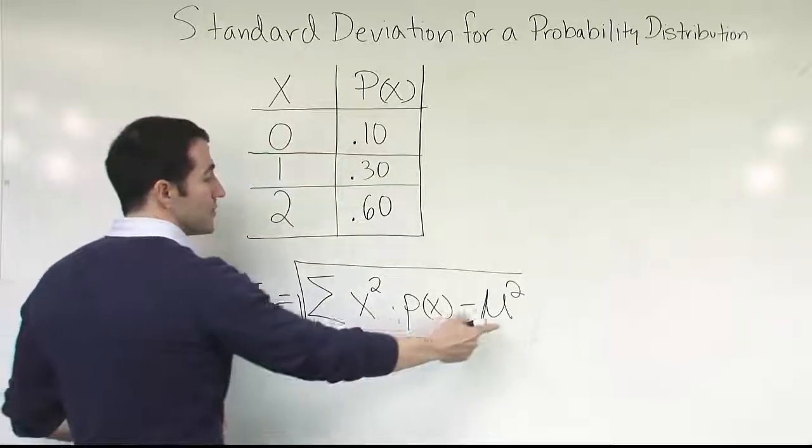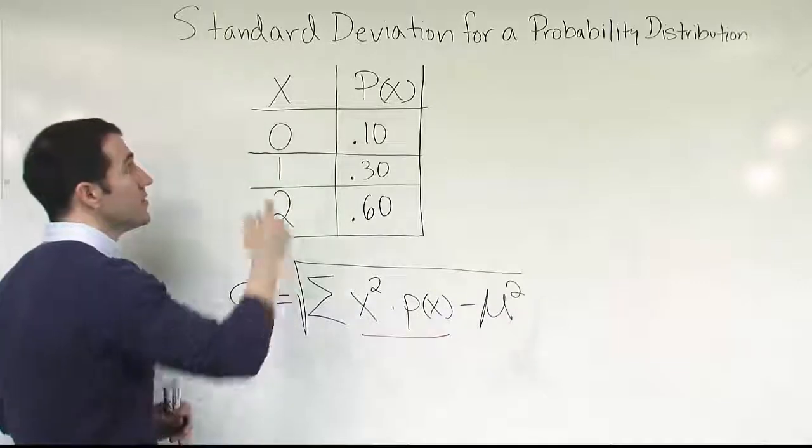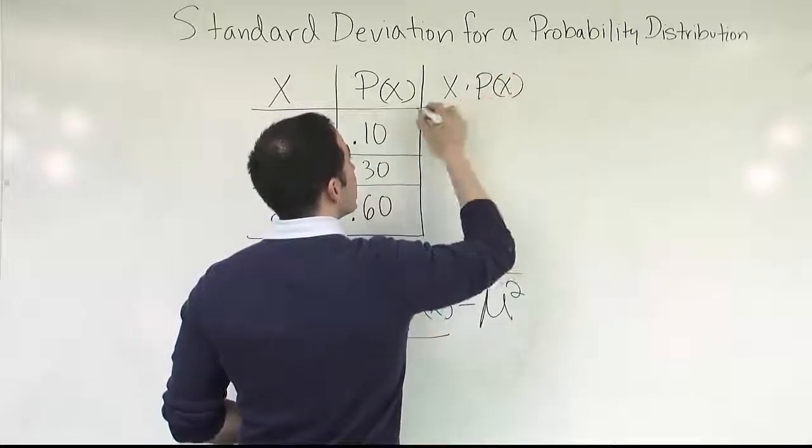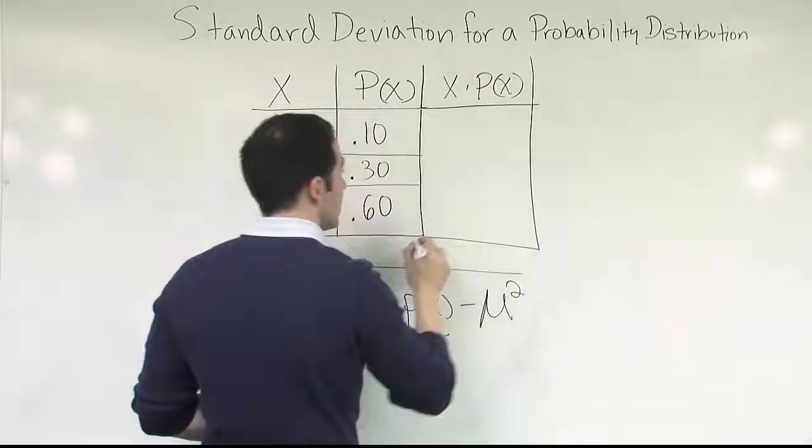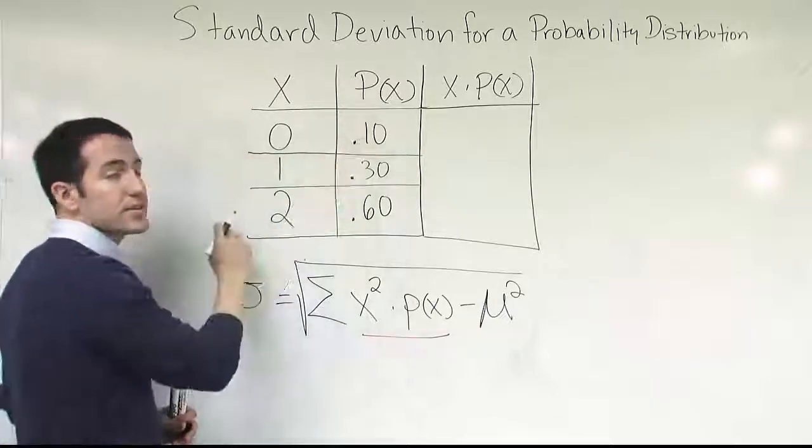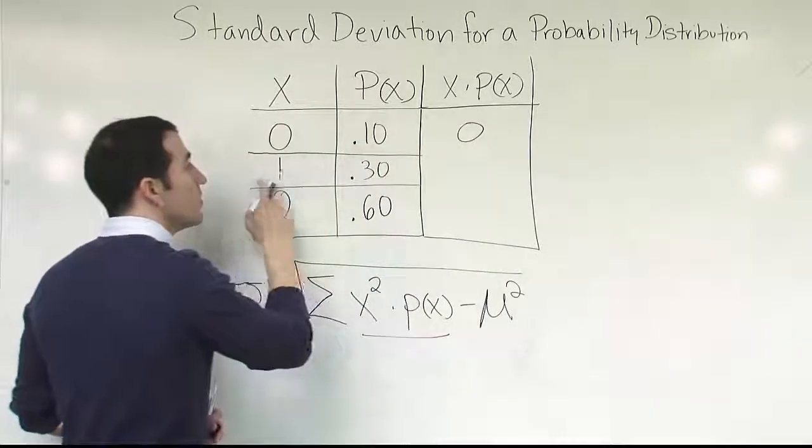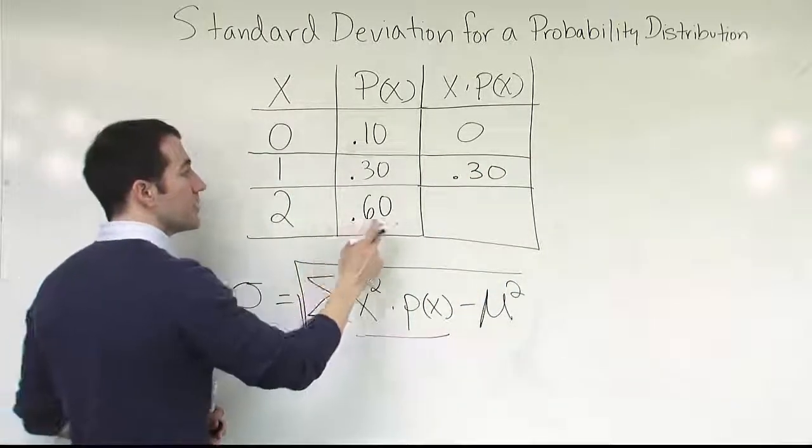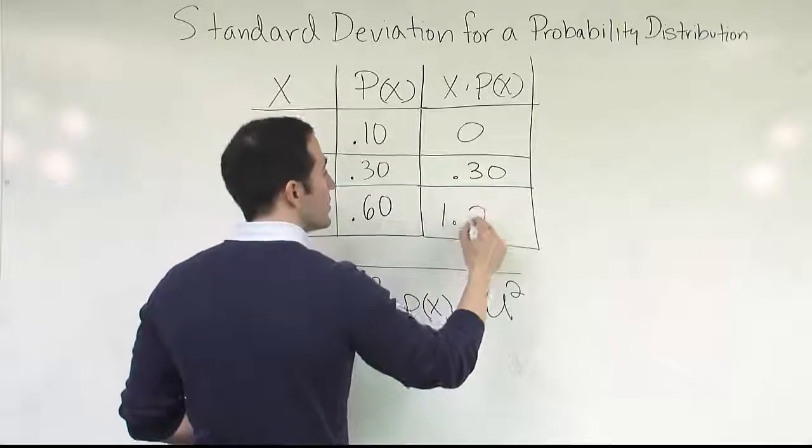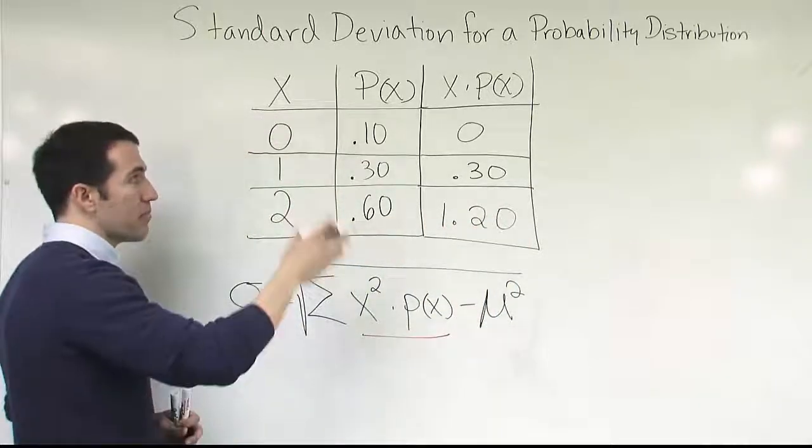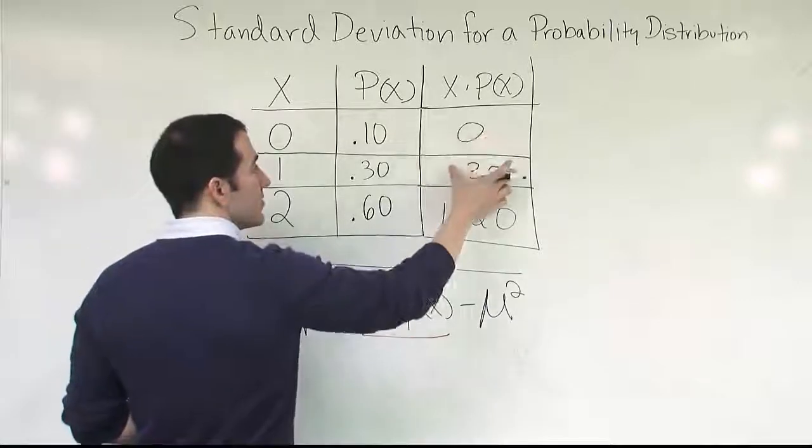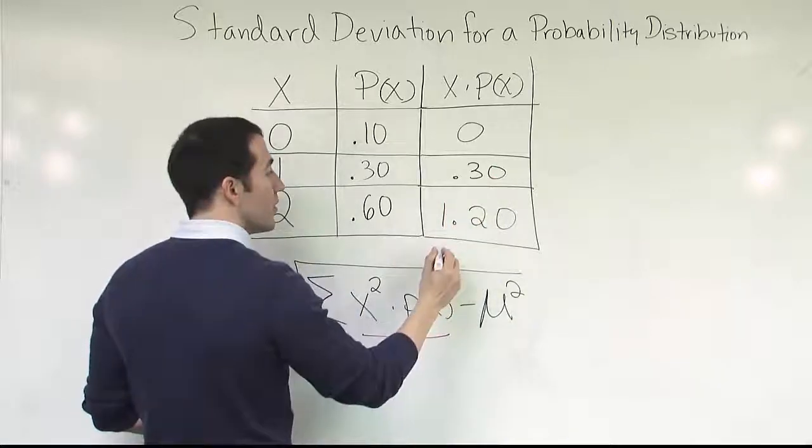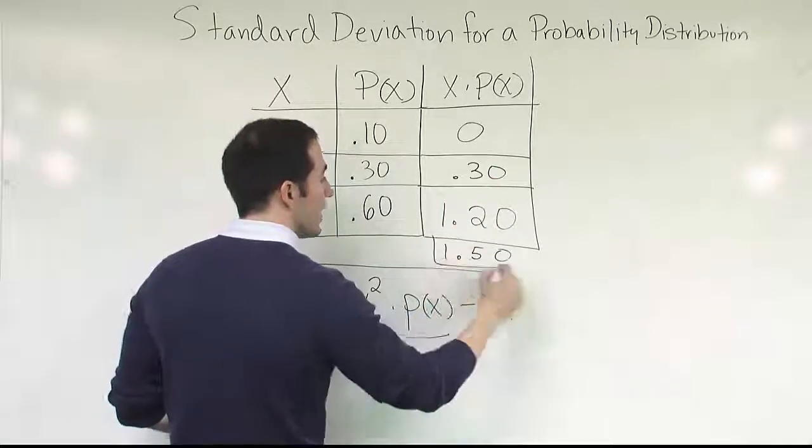Okay, so first thing you want to do is to get the average, because we need the average for the formula. To do the average, we do x times p of x. So let's go ahead and say x times p of x, and multiply straight across. So 0 times 0.10, of course, is 0. 1 times 0.30 is 0.30. 2 times 0.60 is 1.20. Okay, so at that point we have our list of values to sum to get our mean. So we'll do 0.30 plus 1.20, we get 1.50.